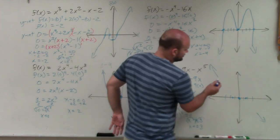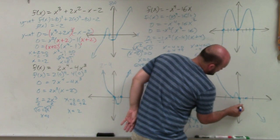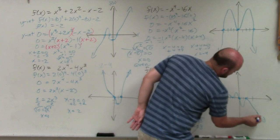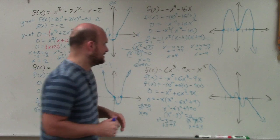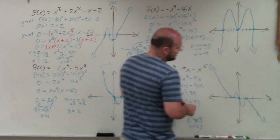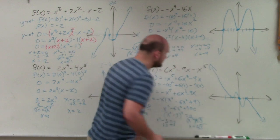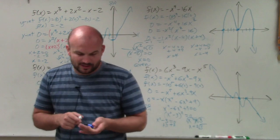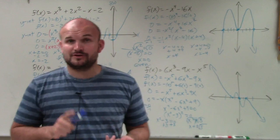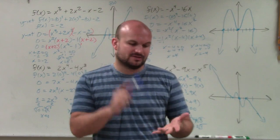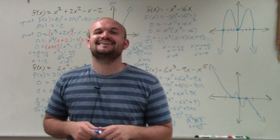So to graph this: starting from the end behavior rising on the left, we rebound at negative √3, cross through x = 0, then rebound again at positive √3, before falling to the right. And there you can see, ladies and gentlemen, that your x-intercepts are at plus or minus √3. That is how you use end behavior, y-intercept, x-intercept, factoring, and multiplicity to graph a polynomial.